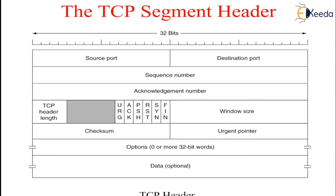The sequence number and acknowledgement number fields perform their usual functions. Note that the acknowledgement number specifies the next byte expected, not the last byte correctly received. Both fields are 32 bits long because every byte of data is numbered in a TCP stream.